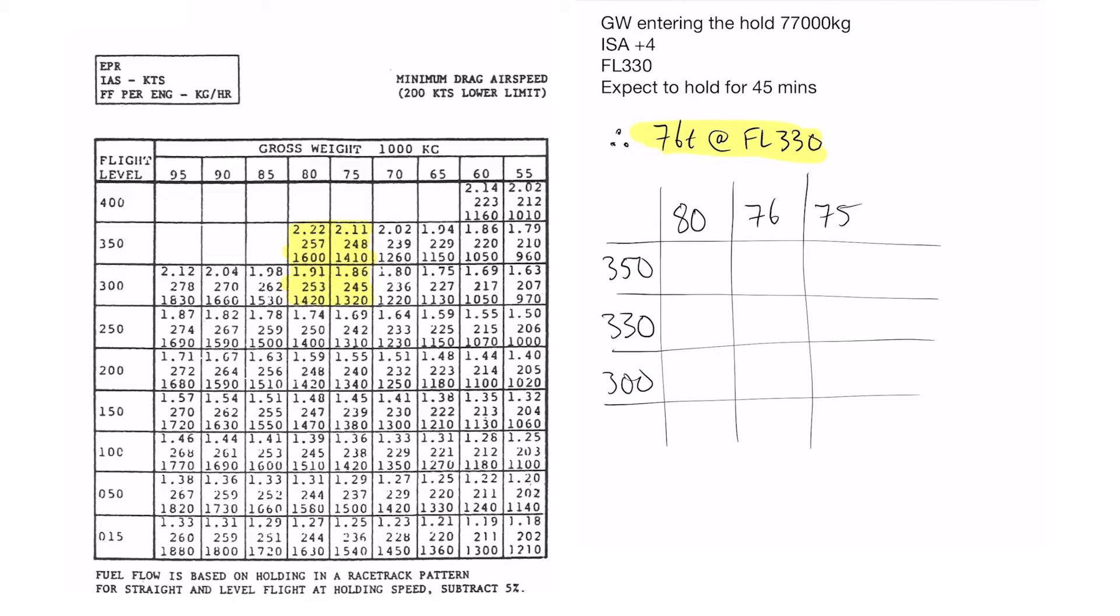Alright, we're going to continue on with this example but looking at the speed in this case. We're using the same example as the last video. Gross weight entering the hold 77 ton, ISA plus 4, flight level 330, expect to hold for 45 minutes.